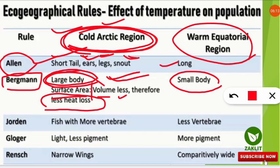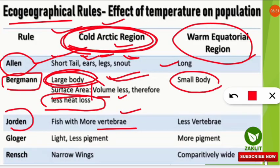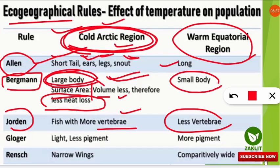Next is Jordan's eco-geographical rule, which states that fish in cold arctic regions have more vertebrae in their vertebral column, as seen in the picture shown, compared to fish found in equatorial regions which have fewer vertebrae. After Jordan's rule, the next important eco-geographical rule is Gloger's Rule.